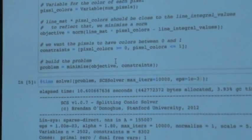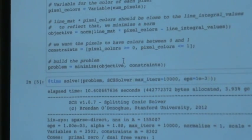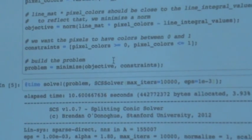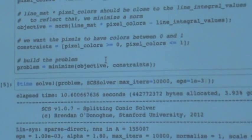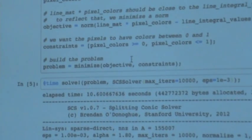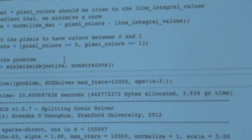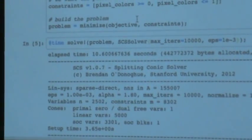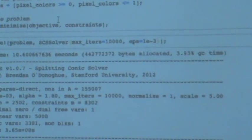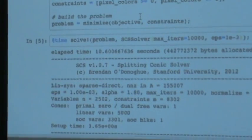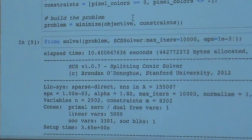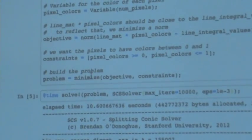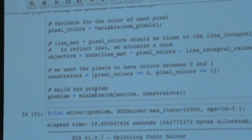So here's where the Convex.jl kicks in. We're going to first set up our variable, which is going to be however many pixels are in our image. We want to figure out what each pixel should be assigned - a value between zero and one, zero being completely dark and one being completely white. Next we set up our objective function, which is the line integral values should be very close to the pixels times that matrix we have. It's essentially a least squares problem - we want them to be close so we want to minimize the norm of the difference. Then we have a couple constraints just to make sure we're getting valid pixels - we don't want anything to go under zero and we don't want anything to go above one.